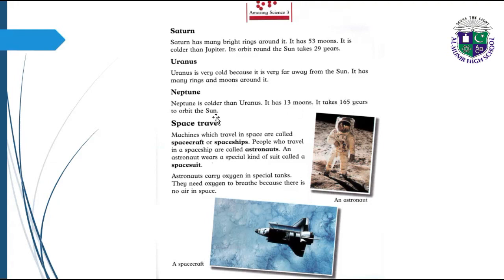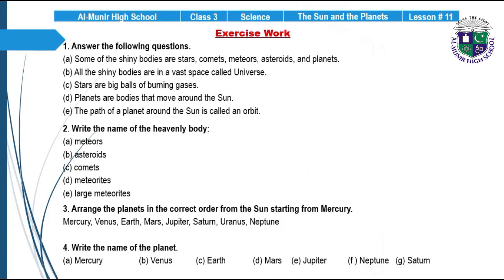Space travel: Machines which travel in space are called spacecraft and spaceships. People who travel in a spaceship are called astronauts. An astronaut wears a special kind of suit called a space suit. Astronauts carry oxygen in special tanks. They need oxygen to breathe because there is no air in space.